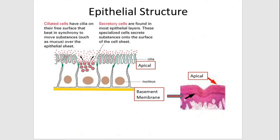The functions of epithelium include: first, protection; second, absorption — certain epithelial cells lining the intestine absorb nutrients from digested food; third, secretion — glandular epithelial tissue secretes specific chemical substances such as enzymes, hormones, and lubricants; fourth, excretion — epithelial tissues in the kidneys excrete waste products and reabsorb needed materials, and sweat glands excrete sweat through epithelial cells.